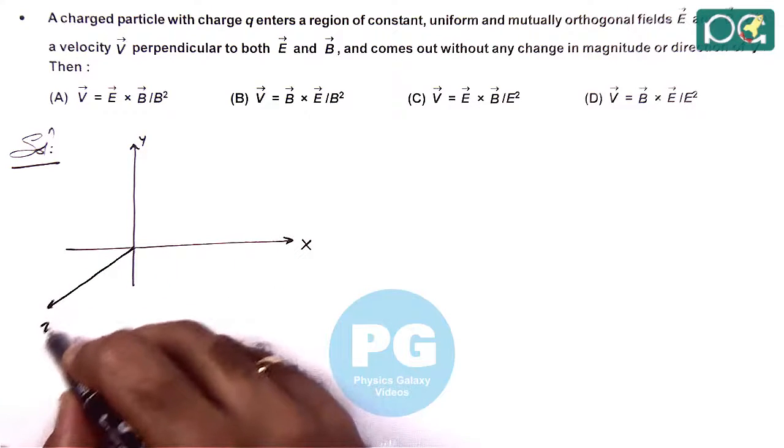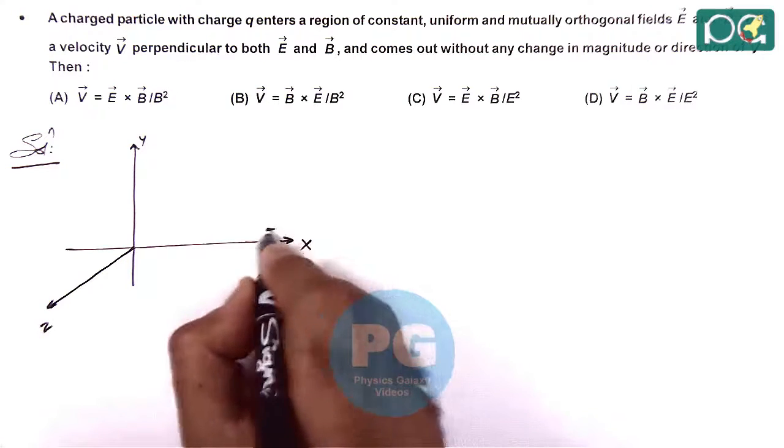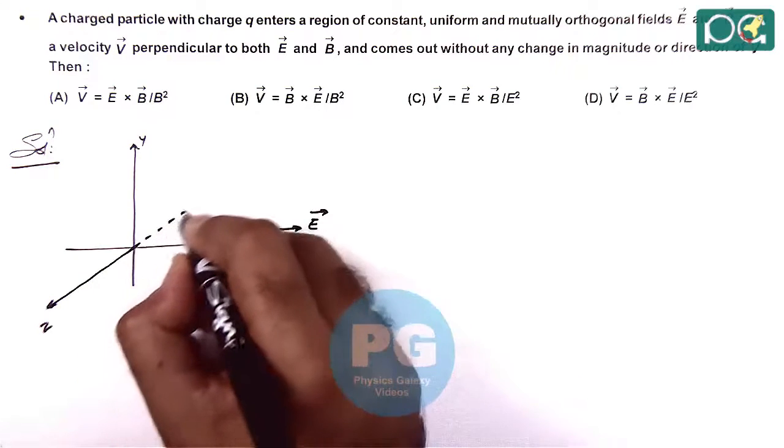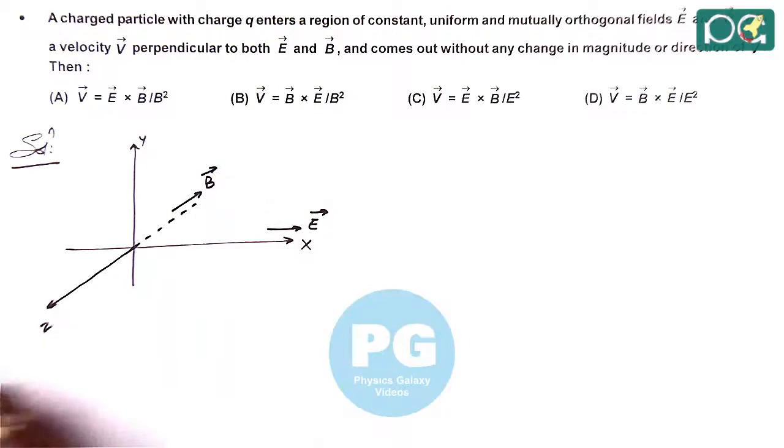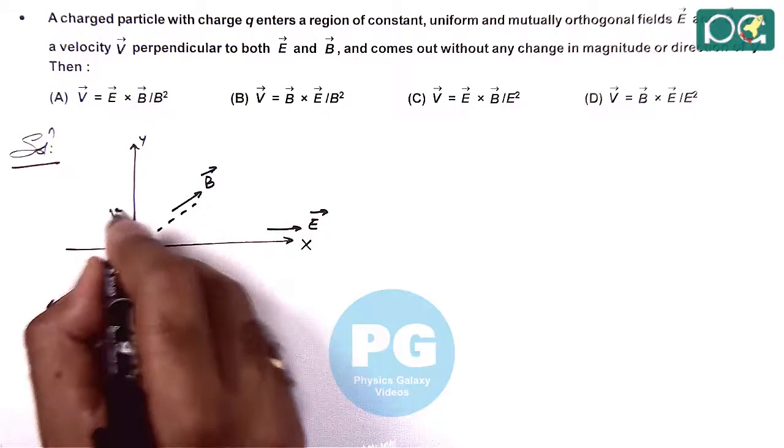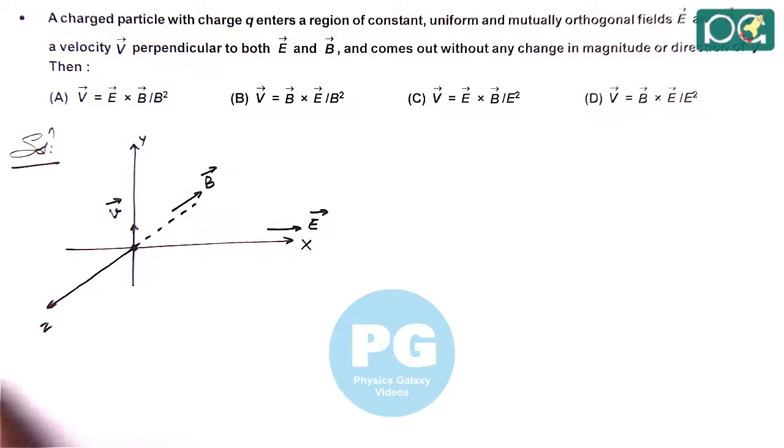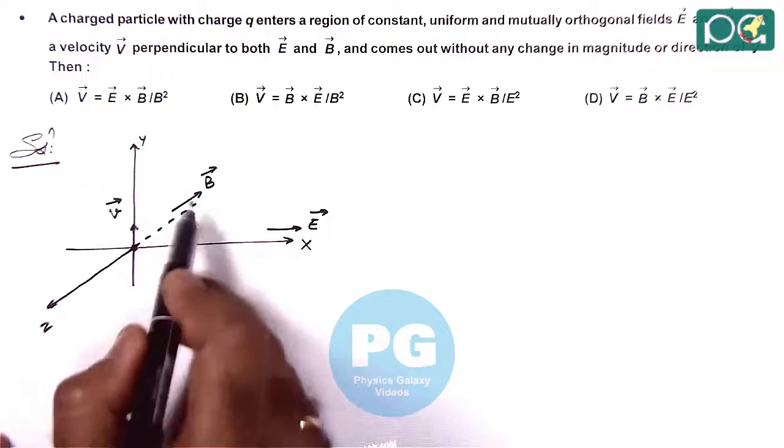So here we can analyze if along x direction it is the electric field vector, along minus z direction we consider a magnetic field vector, and a charged particle enters in this region with a velocity vector in y direction. So first condition is satisfied that E and B are perpendicular and V is perpendicular to both E and B.